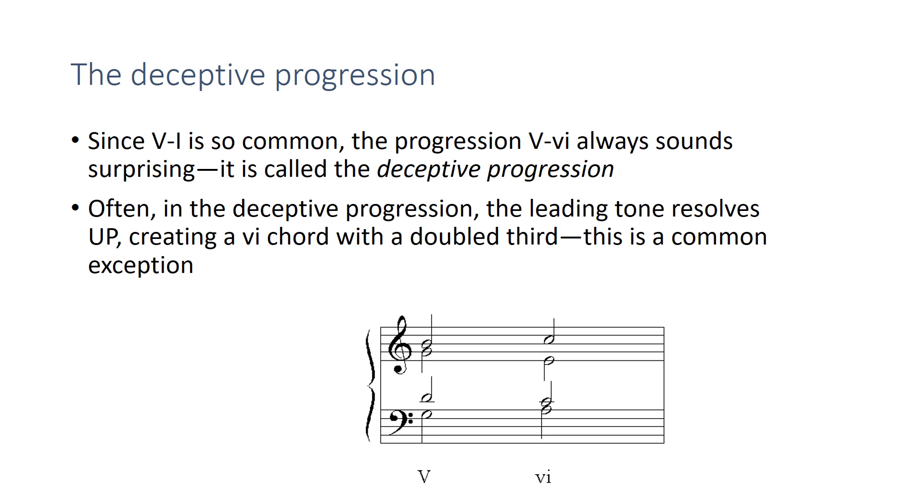So that can generate a six chord that has two thirds in it and this is a common exception to having two roots in your root position chords. So you can see the leading tone is in the top voice here and that T should go up to do, so that ends up with an A chord with two C's in it, two thirds. So remember that, that's an exception that's allowed. Once again, here's how that sounds.